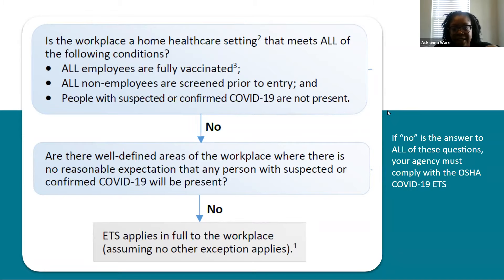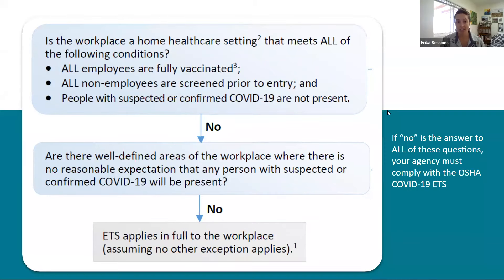The ETS applies in full to the workplace, assuming no other exemptions apply. If the answer is no to all of the questions, your agency must comply with the OSHA COVID-19 ETS. These statements are absolutist — all employees, all non-employees, and then it goes really broad and says 'people,' which could be anybody coming into your business, coming into the home, or any member of the care team. So there's a lot of opportunity to say you cannot answer absolutely yes, and you must err on the side of caution.